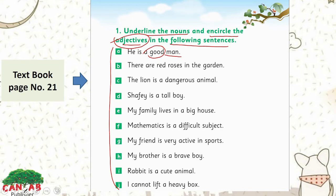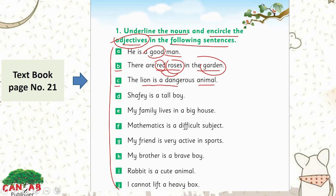Sentence B: 'There are red roses in the garden.' We have two nouns here — the garden and the roses — but the describing word or adjective is red, which is describing the roses. Sentence C: 'The lion is a dangerous animal.' Here, lion is a noun and dangerous is an adjective describing the lion. Sentence D: 'Shafi is a tall boy.' Tall is an adjective and Shafi is a noun; tall is describing Shafi.